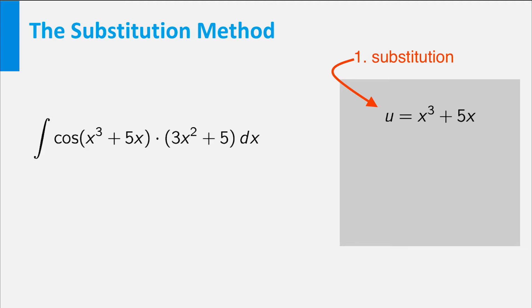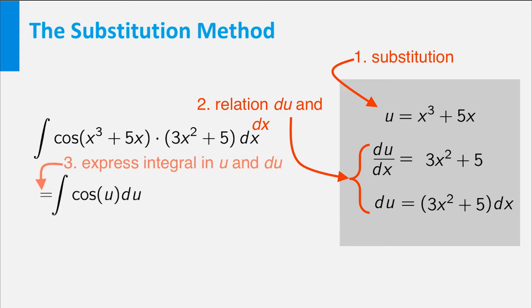From this relation, it follows that du equals 3x squared plus 5 dx. Now, we can express the integral entirely in terms of u and du. The new integral is easy to evaluate. Finally, we turn to the original variable and we have found the answer.